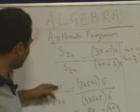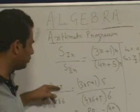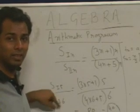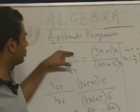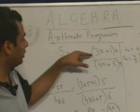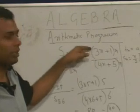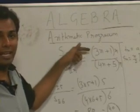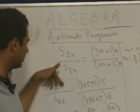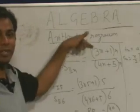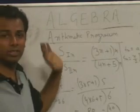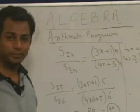Always remember: whenever the values of n are different and since the sum is quadratic, to make it quadratic you need to multiply both the numerator and denominator by n. Then you can directly put the value 5 in the numerator and n = 6 in the denominator.